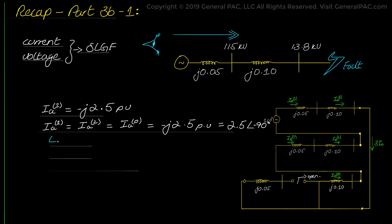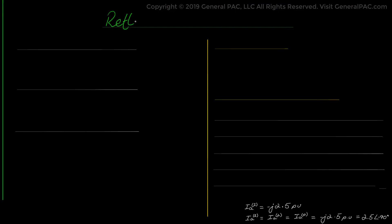It is also important to note the subscript. The lower case subscript indicates the fault current values on the low-voltage side. The upper case will represent fault current on the high-voltage side. We now proceed by reflecting these per unit current values on the high-voltage side and then will multiply them with the appropriate base values to find the actual values.